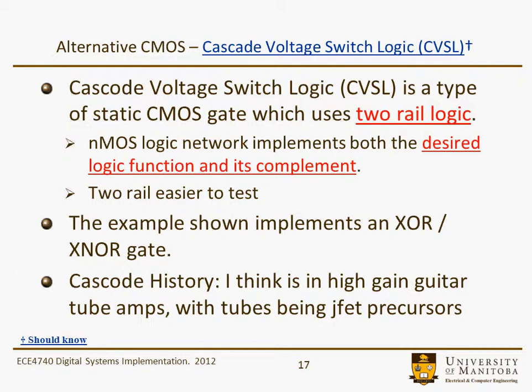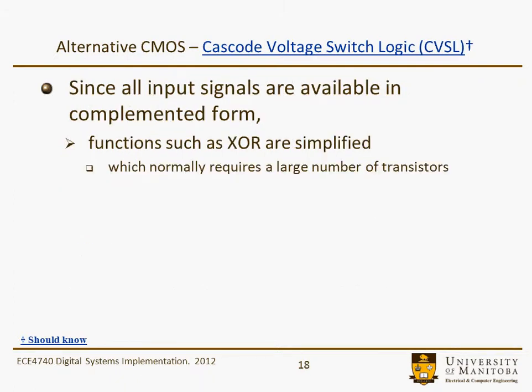This is a bit of history for CASCODE. It was used in high-gain guitar tube amps, with the tubes being the precursor to the JFET, which is a precursor to the MOSFET. Since all the input signals are available in a complemented form, functions such as XOR are simplified, which normally require a large number of transistors, and we looked at some of those implementations quite early on.